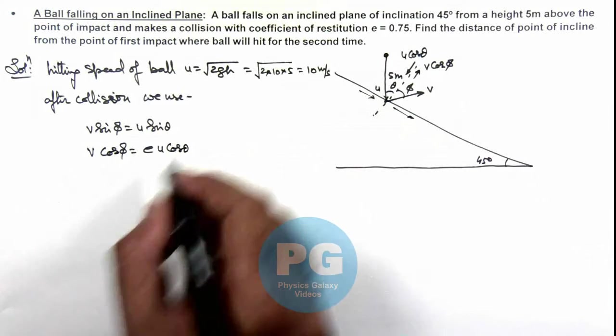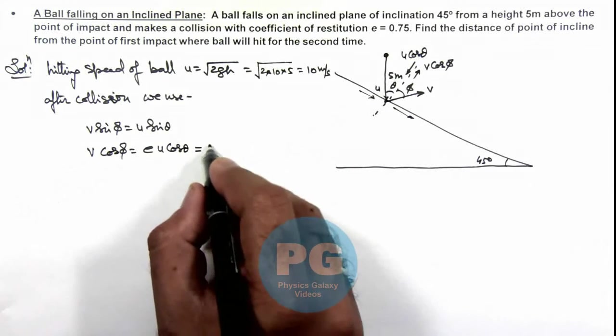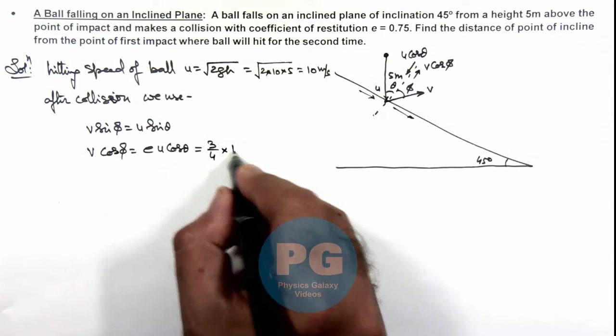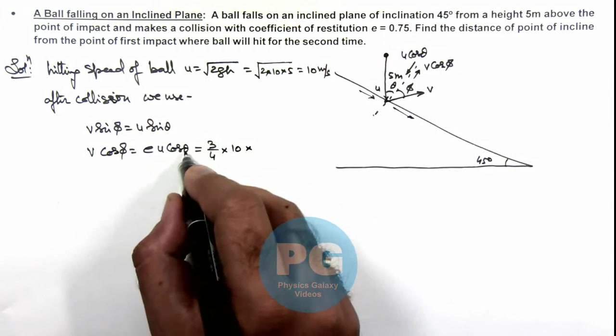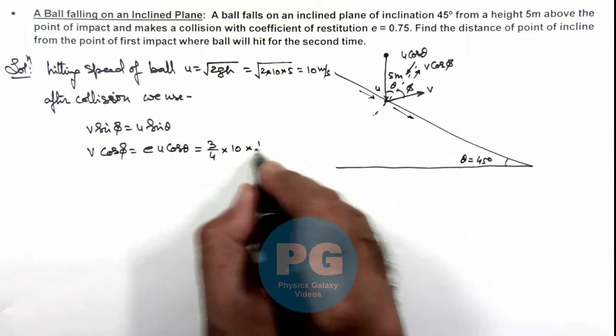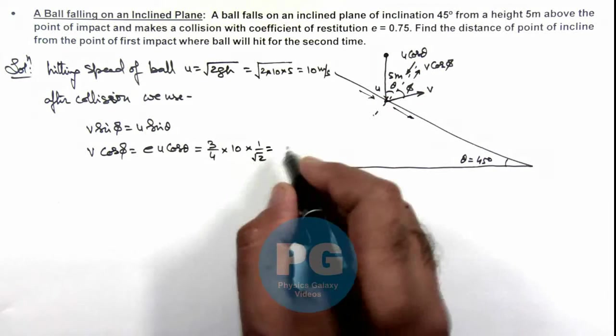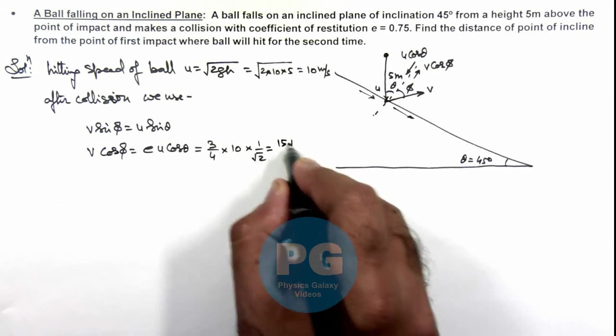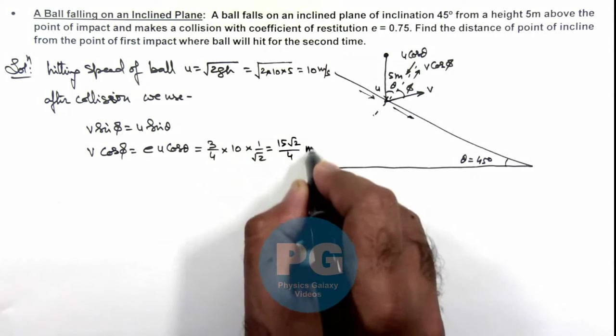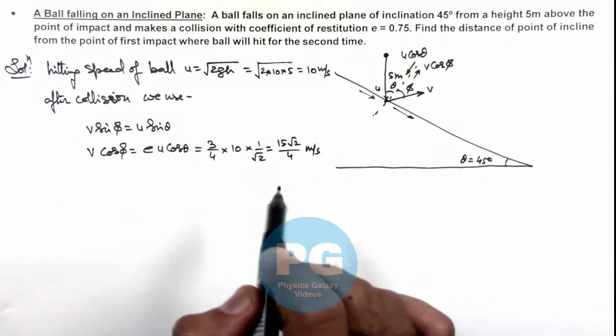If we substitute the values, e is 0.75, which is 3/4, multiplied by u = 10, multiplied by cos θ. For θ = 45 degrees, it is 1/√2. So we get the value as 15√2/4 meters per second. This is the velocity with which the ball rebounds away from the incline.